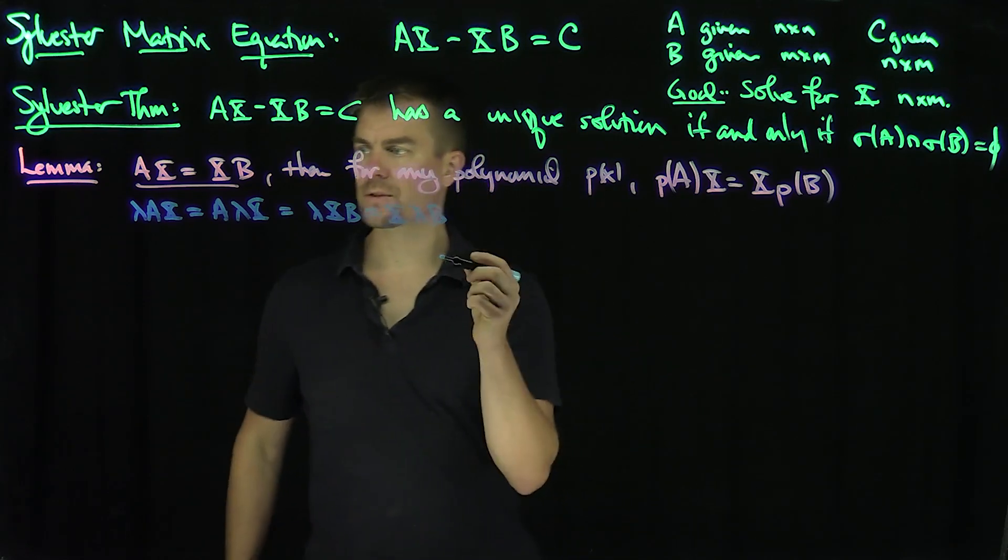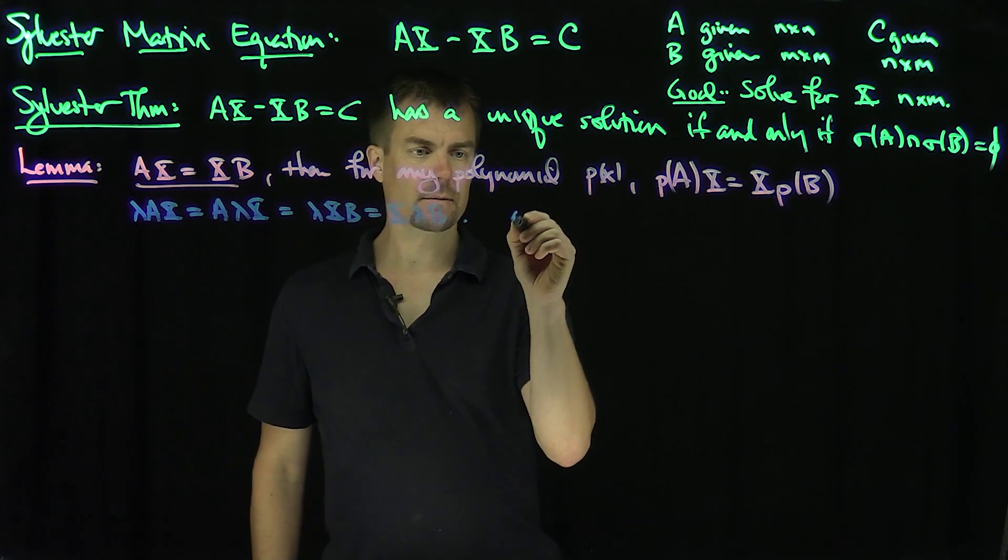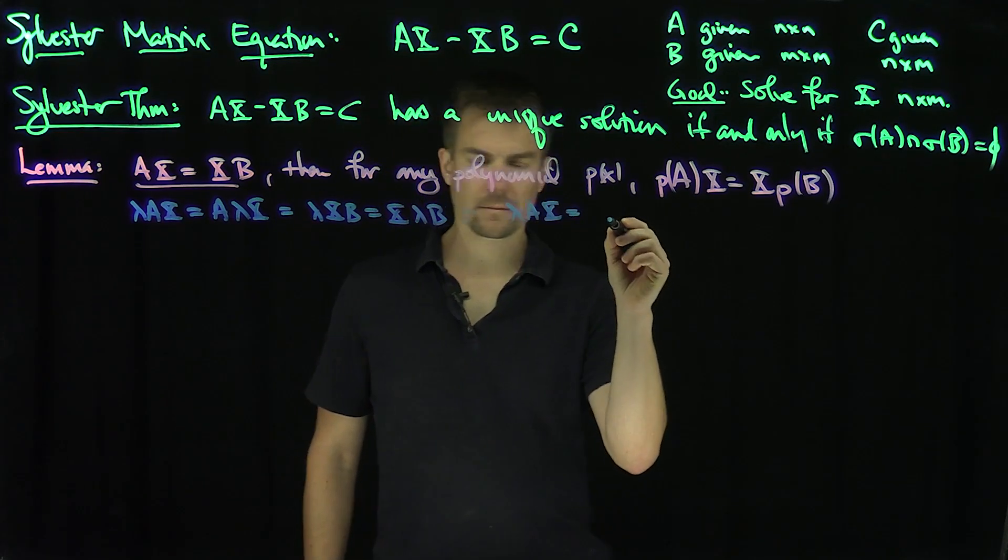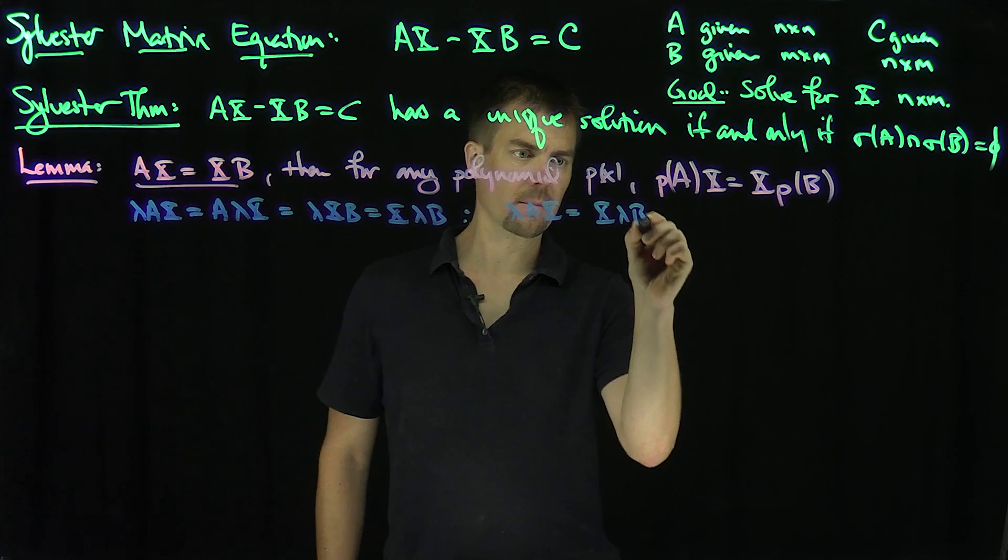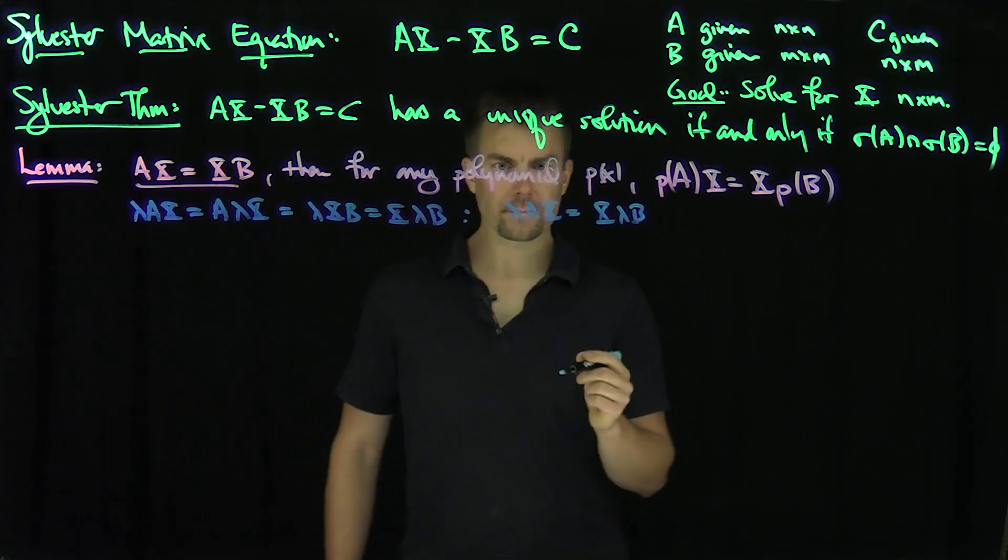In other words, it works for constants. So A lambda AX equals X lambda B.